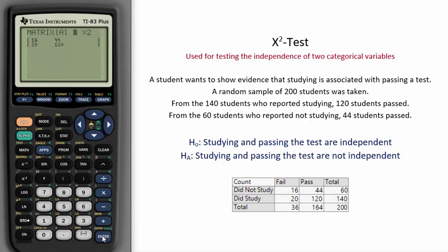Now we must enter in our data values. In this problem, a student wants to show evidence that studying is associated with passing a test. A random sample of 200 students was taken. From the 140 students who reported studying, 120 passed, which means 20 failed.